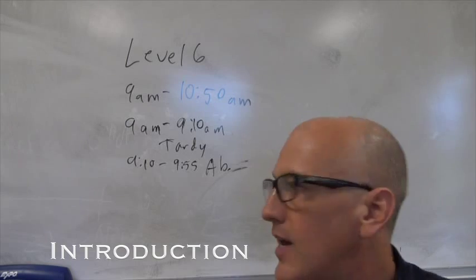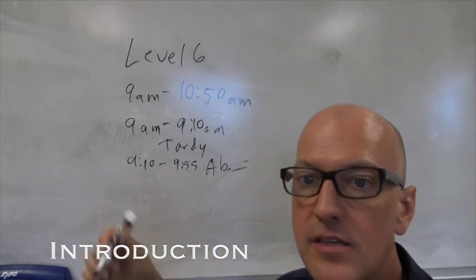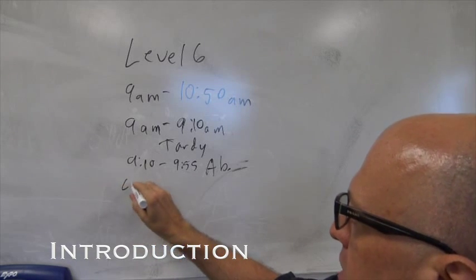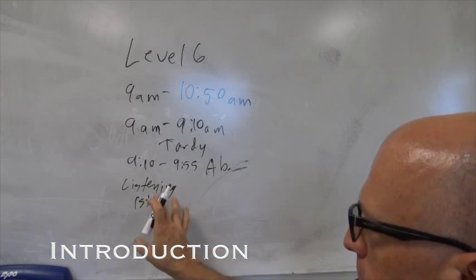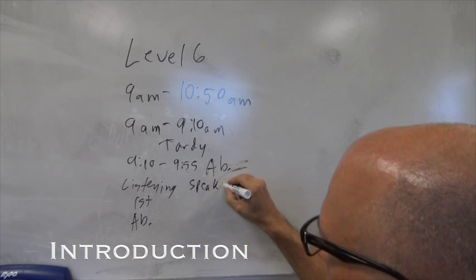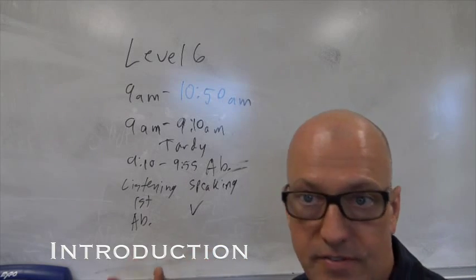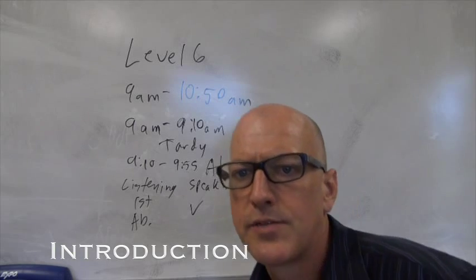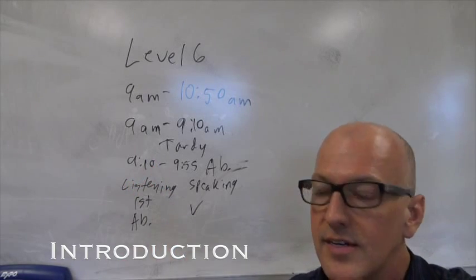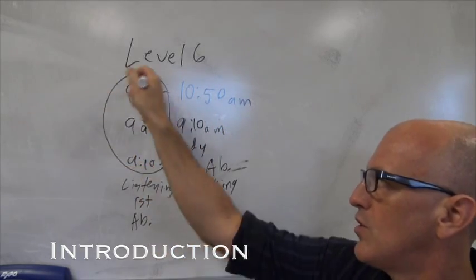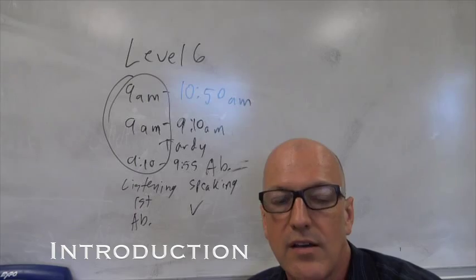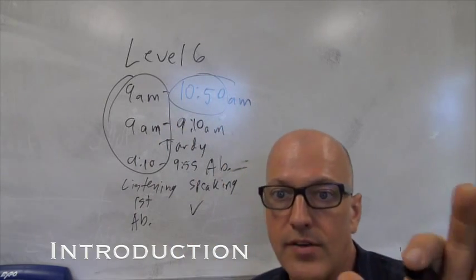If a student comes at, say, 9:15, you don't count them absent for two periods. They'd be counted absent for the listening class — first period — and then for the speaking class they'd be counted present if they stay the whole time. Really, the only issue of people coming in late is when you first get here in the morning. There's a bell that rings at 9 o'clock, which makes it very clear, and a bell at 10:50 that makes it obvious when class is over.